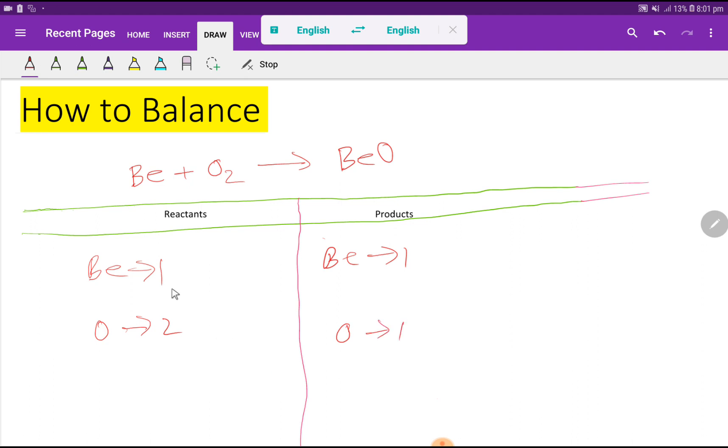To balance this reaction means we have to balance the number of beryllium and oxygen from both sides. Beryllium 1 and 1, so beryllium is already balanced but oxygen 2 and 1, so oxygen is not balanced.